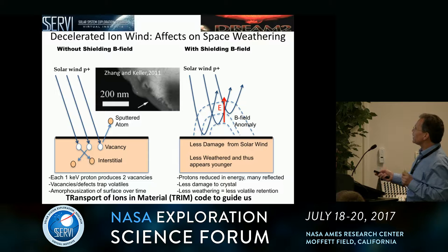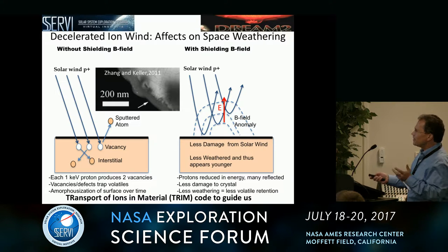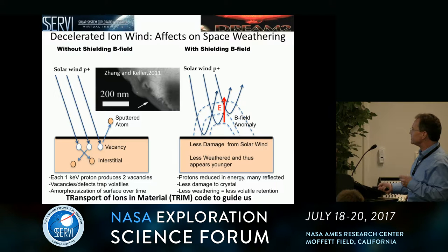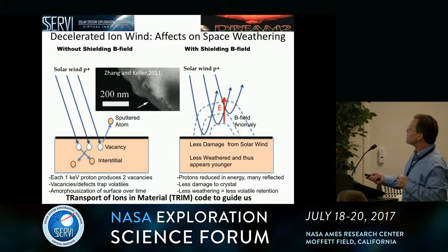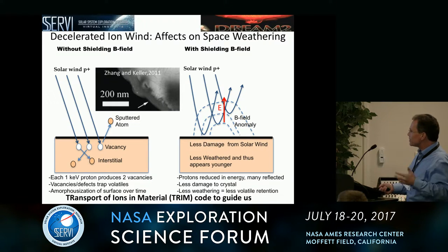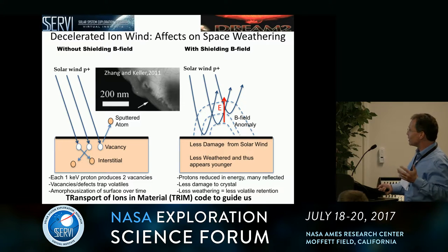This should affect space weathering. Without magnetic shielding, the 1 keV protons come in, and each keV proton creates two vacancies. Over time, these vacancies create an amorphous layer, which are the ones studied by the Johnson Space Center group — Lindsey Keller and Sarah Noble. Over time, there's an amorphousization.